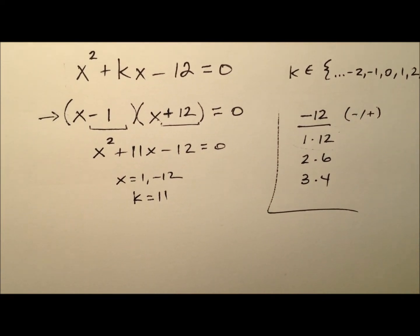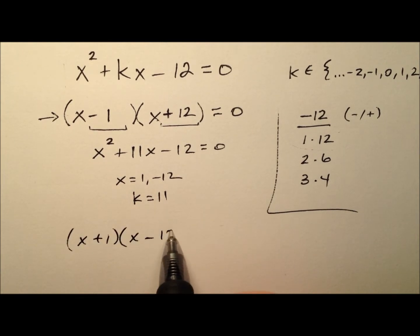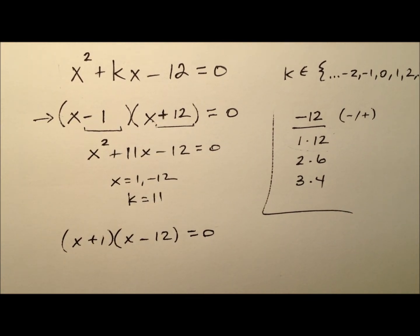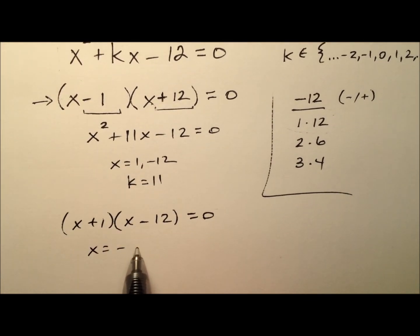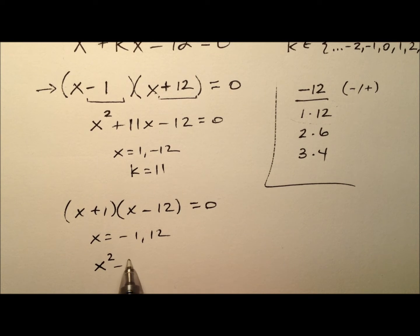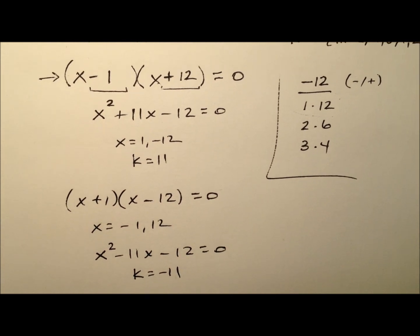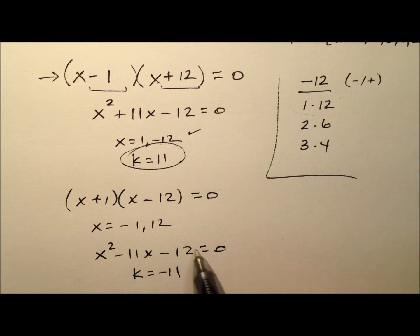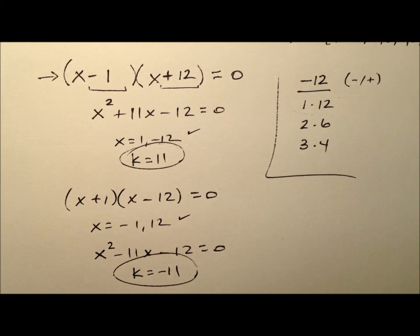What if I switched these up and said (x + 1)(x - 12) = 0, essentially changing the signs? My solutions are -1 and 12, again integer solutions. When I multiply it out, x² - 11x - 12 = 0, so k is negative 11.